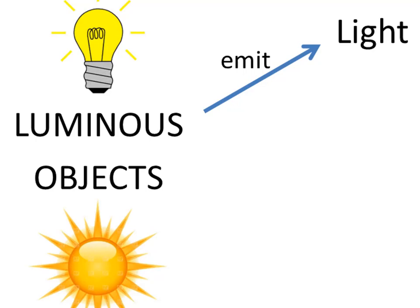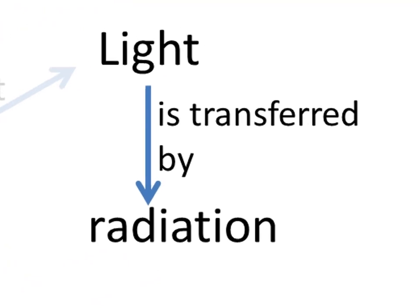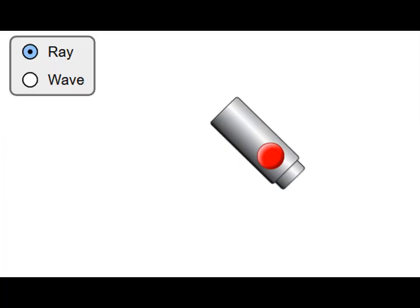That light then travels away from the luminous objects in all directions in the form of waves called radiation. To help us understand this, let's open up this simulation. This shows a torch, actually a laser torch.